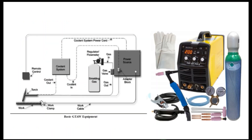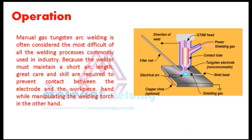Here in this picture, the TIG welding process setup is shown. A visual image on the right shows the actual look of the components. Manual gas tungsten arc welding is often considered the most difficult of all the welding processes commonly used in the industry, because the welder must maintain a short arc length, and great care and skill are required to prevent contact between the electrode and the workpiece.